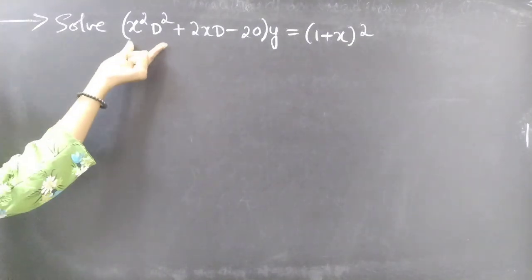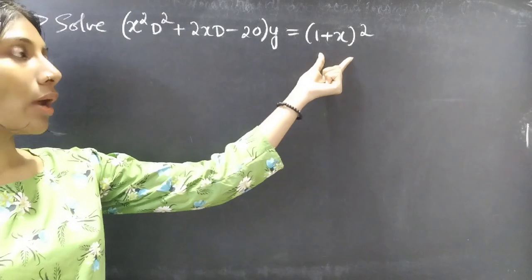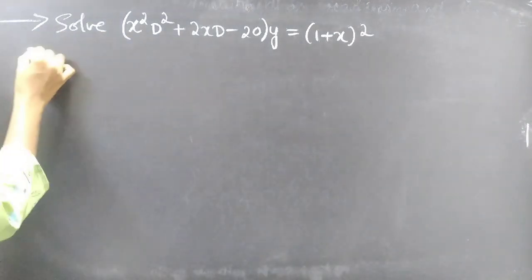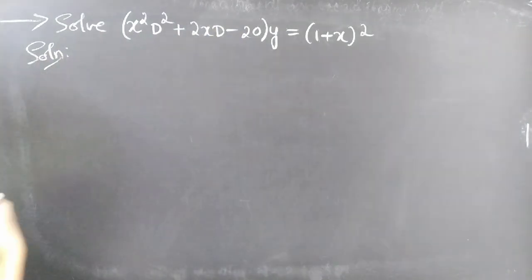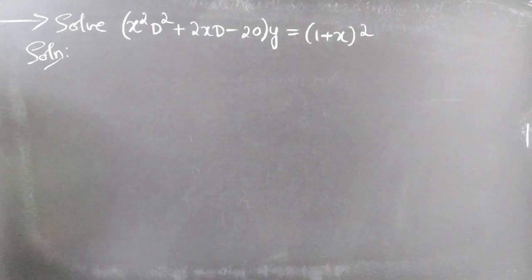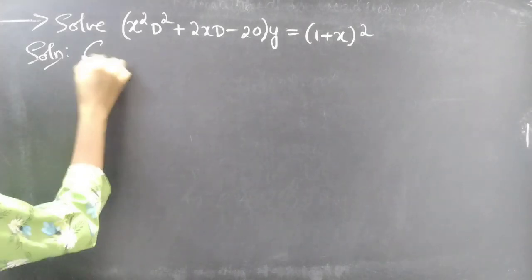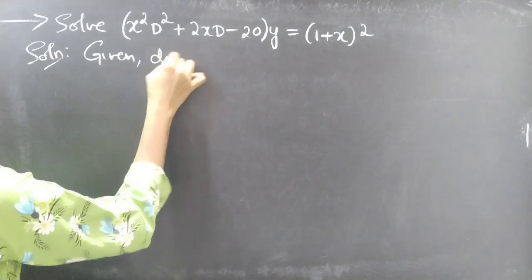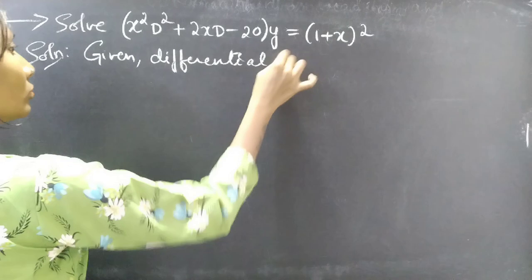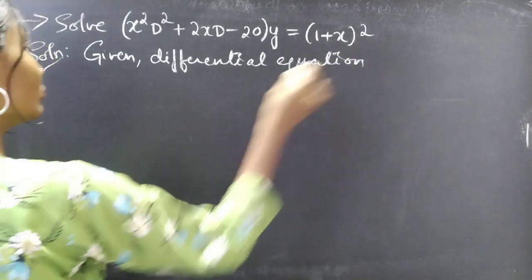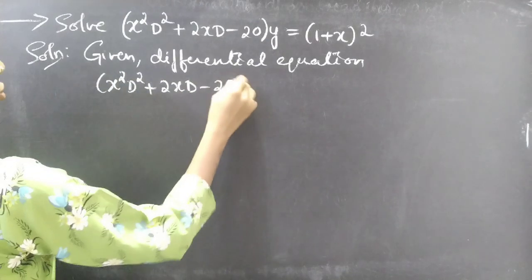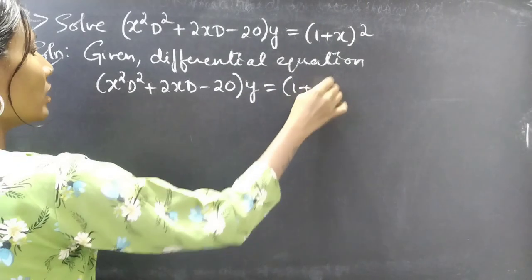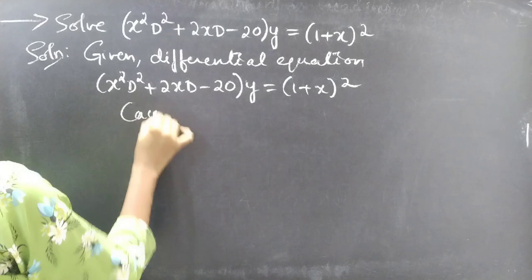Problem: solve x squared D squared plus 2x D minus 20 into y equal to 1 plus x whole square. We are given an equation with variable coefficients, and we are going to reduce this to an equation with constant coefficients by making a substitution. This is a Cauchy's equation.